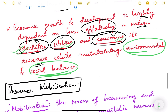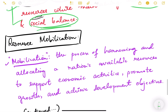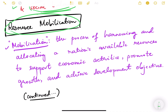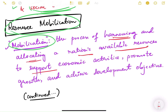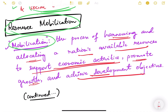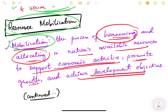Now let us move to the main topic — resource mobilization. Mobilization is the process of harnessing and allocating a nation's available resources to support economic activities, promote growth, and achieve developmental objectives. We identify the resources, harness them, and allocate them to various activities so that our economic growth and development happens. In the next video we will continue with this topic. Thank you.